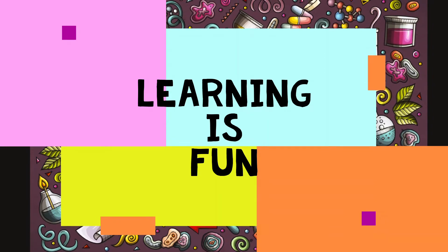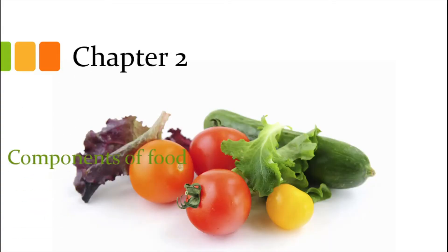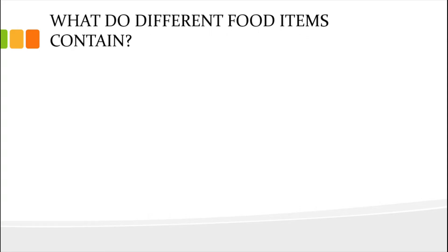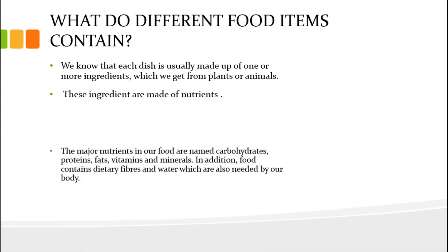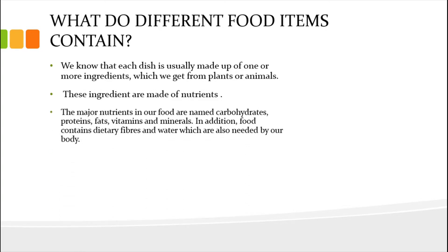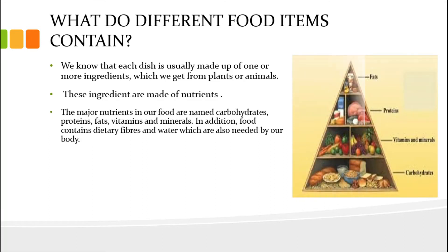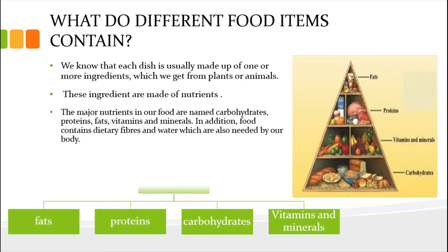In this video we will talk about the second chapter: Components of Food. In the previous chapter we talked about various sources of food and ingredients from which food items are made. Today we will talk about the various components from which ingredients are made, and these components are called nutrients. The major nutrients present in our food are carbohydrates, protein, fats, vitamins, and minerals. In addition, food contains dietary fibers and water, which are also needed by our body.